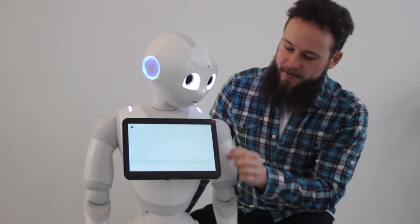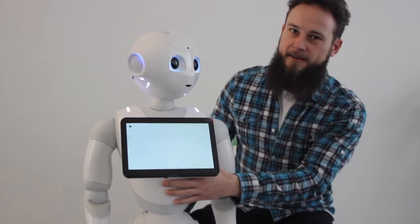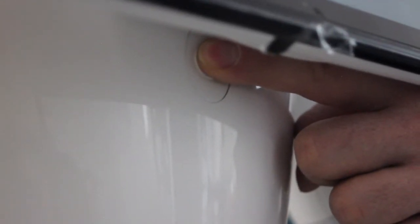Now we will show how to shut Pepper down. We push the chest button for three seconds. One, two, three. She makes knock knock and will slowly shut down.